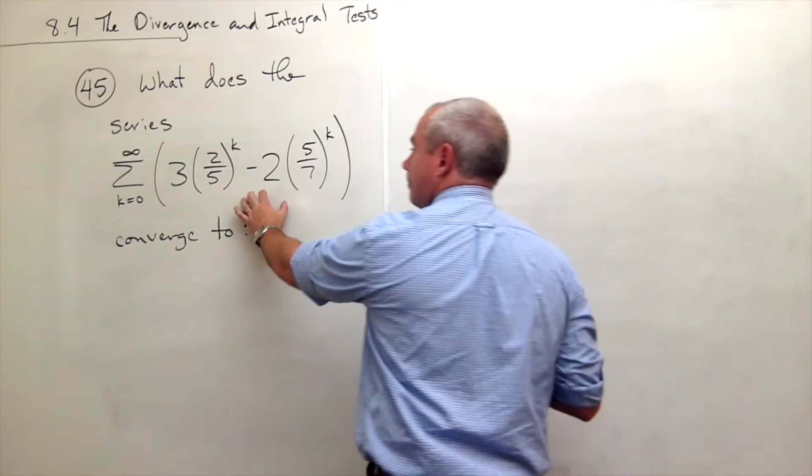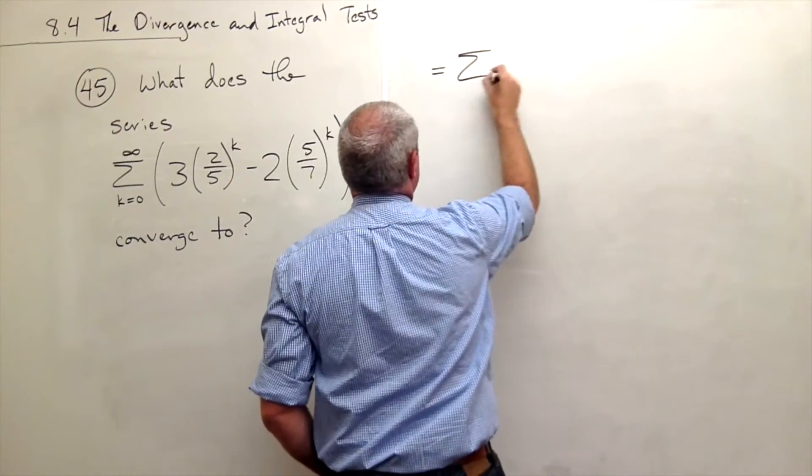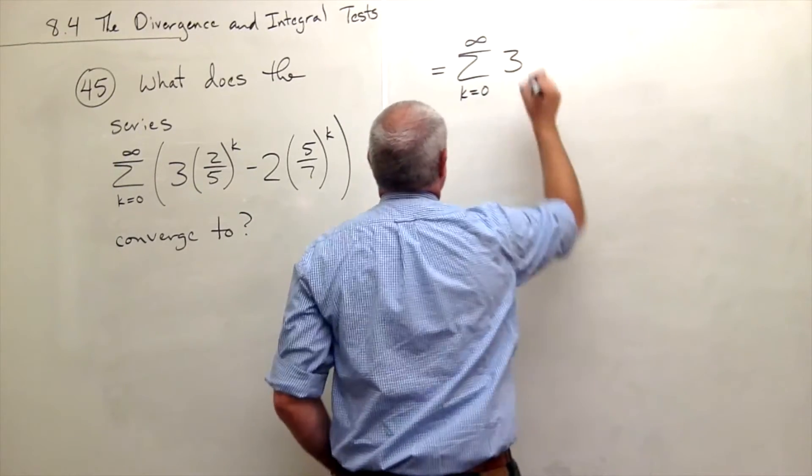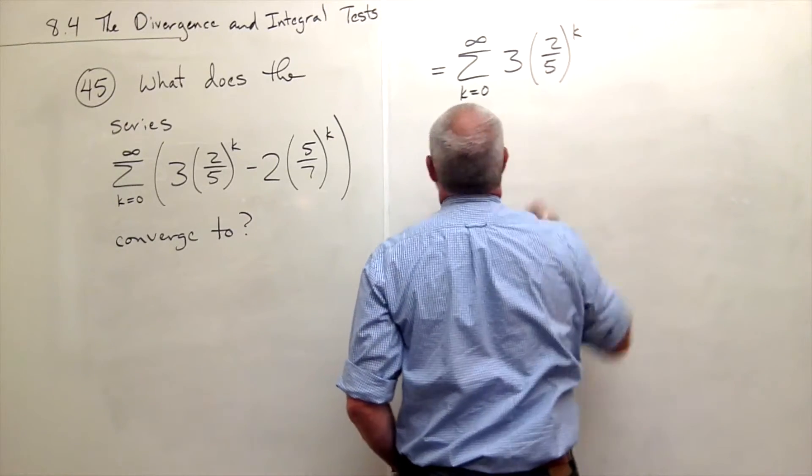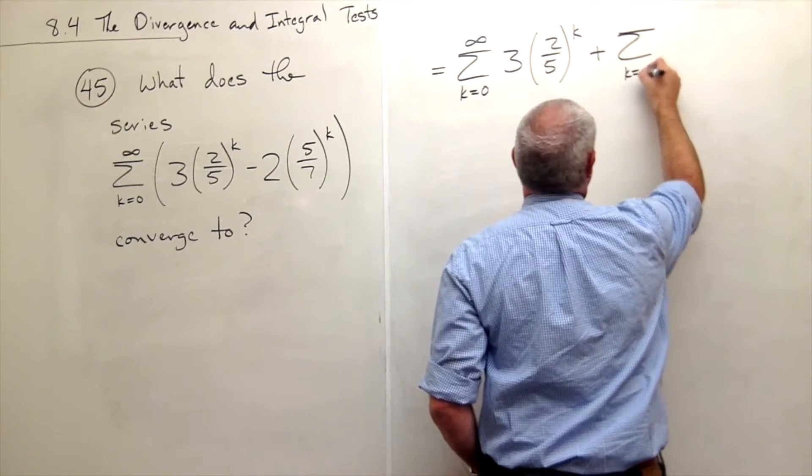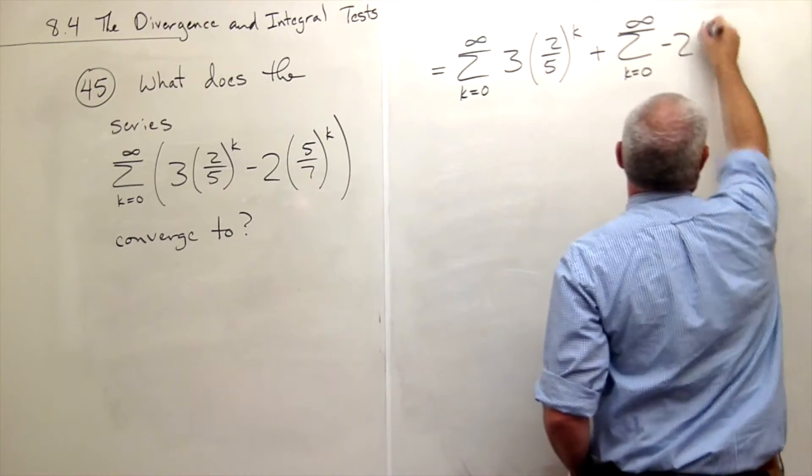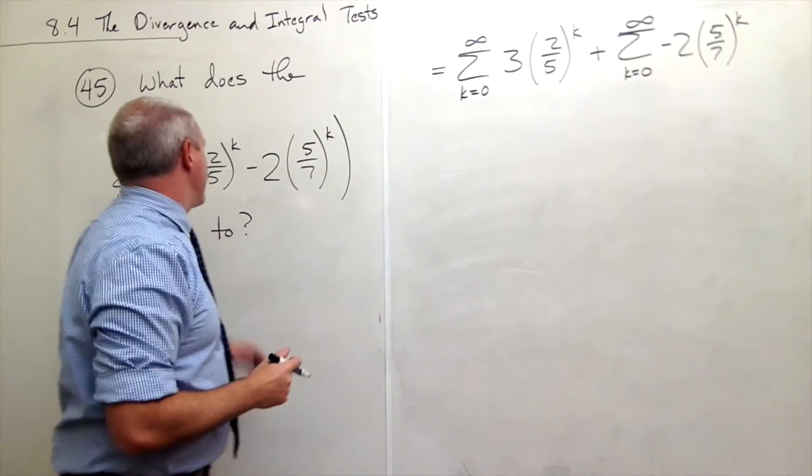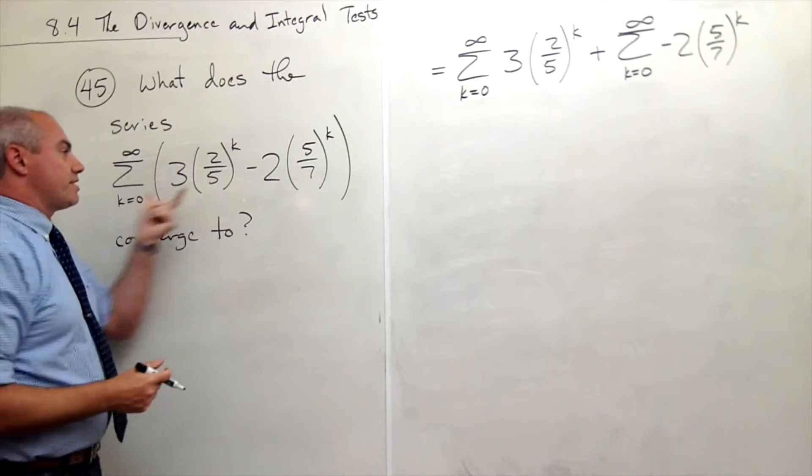So I'm going to rewrite this sum this way. This is equal to the sum k going from zero to infinity of three times two-fifths to the k plus the sum k going from zero to infinity of negative two times five-sevenths to the k. So I just broke this up over the addition. So it's the sum of the first thing, plus the sum of the second thing.